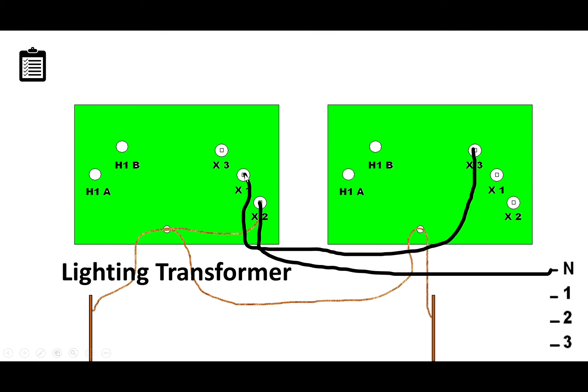After that, we're going to connect the X1 of the lighting transformer to the X3 of the power transformer. This transformer on the right we're calling the power transformer. It's generally a little smaller KVA as well. We're doing X1 to X3. We actually could have done the X3 of the left one to the X1 of the right one. It really didn't matter. In this case, I chose the X1 to the X3.